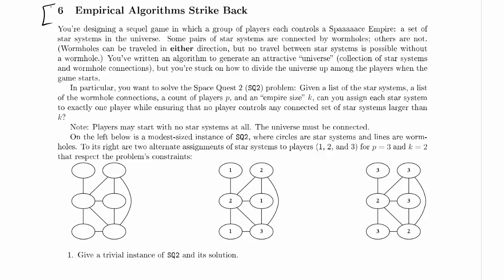In particular, we want to solve Space Quest 2. Here's the Space Quest 2 problem. Given a list of star systems, a list of wormhole connections—again, we're going to assume that's just a graph. I didn't mention this last time, but maybe there are two wormholes between one pair of star systems, so it's a multigraph instead of a graph. We're going to not care. We're just going to say this is a plain old graph.